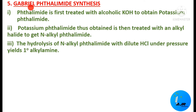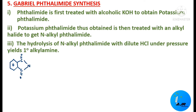The next method is a very important method — Gabriel Phthalimide Synthesis — which involves three steps. In the first step, phthalimide is treated with alcoholic potassium hydroxide: the hydrogen combines with the hydroxide and a water molecule is removed, giving the potassium salt of phthalimide — potassium phthalimide.